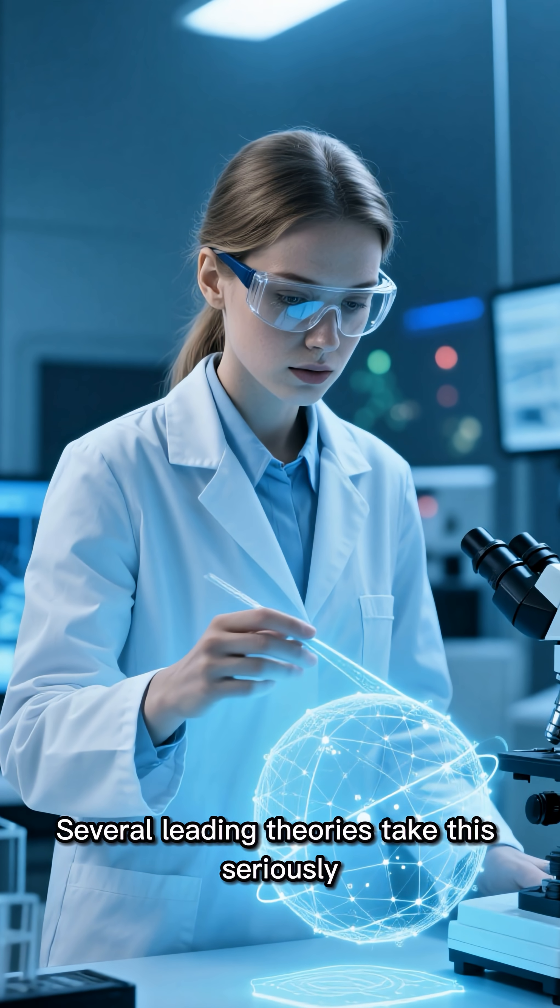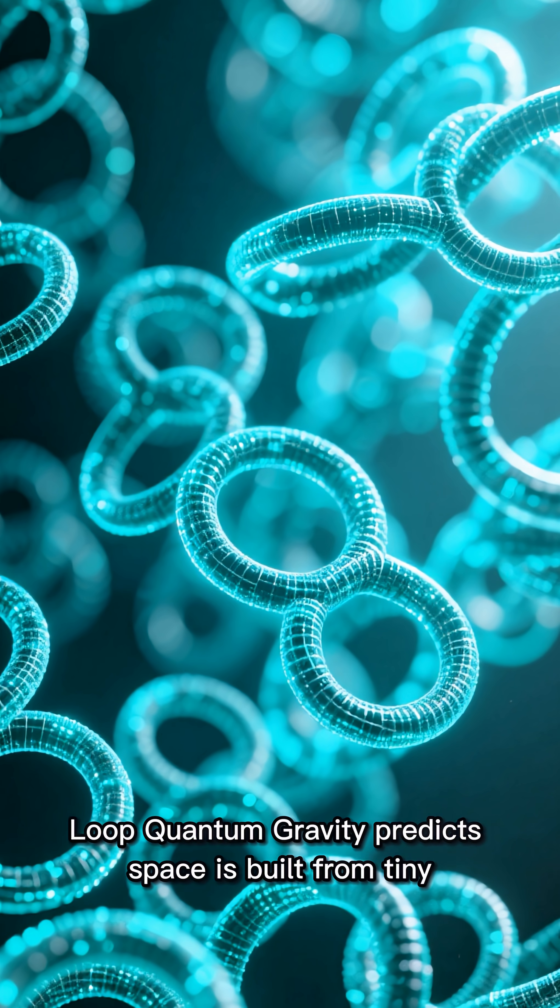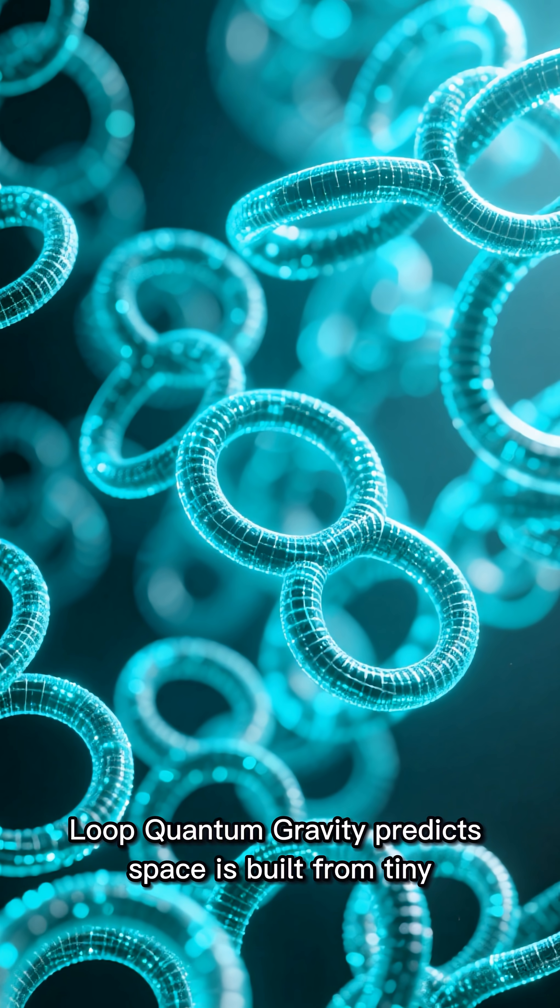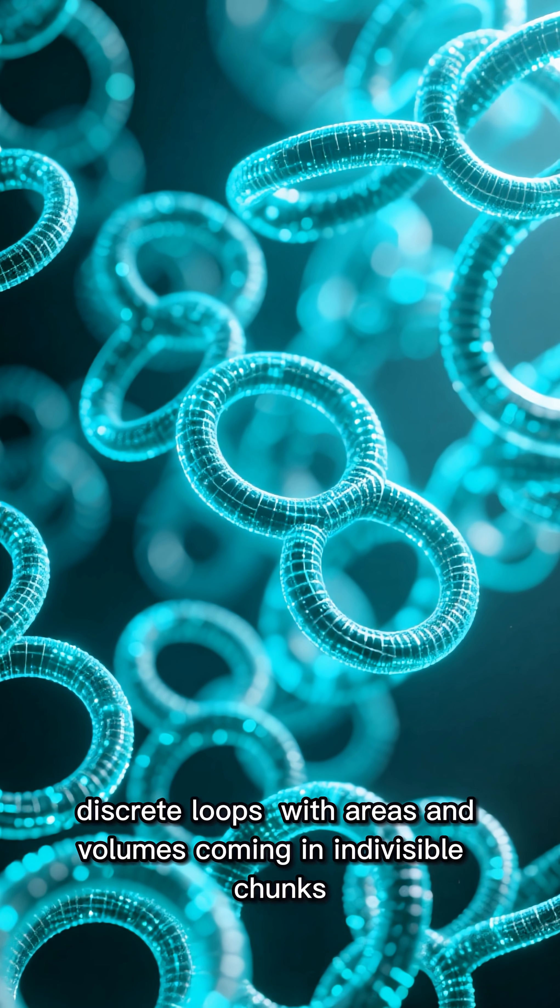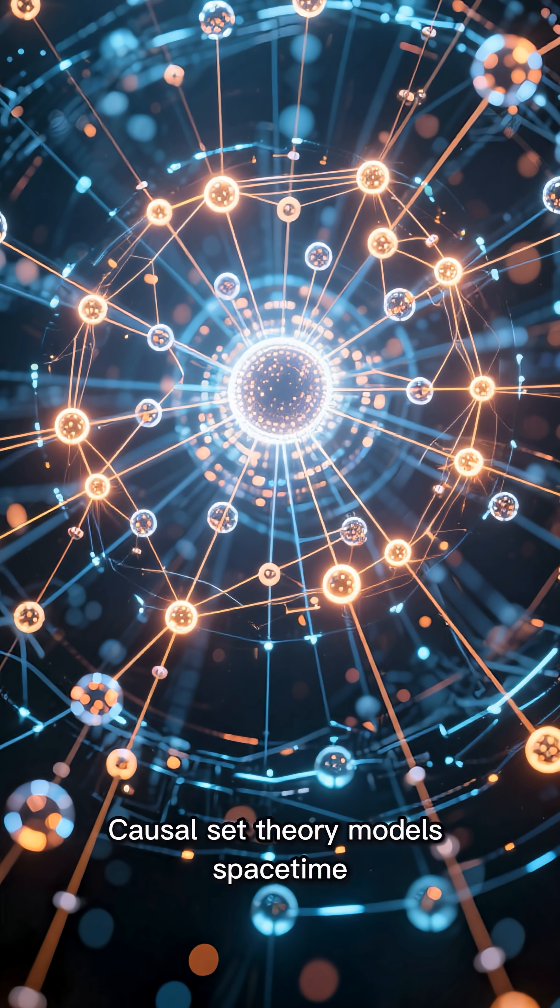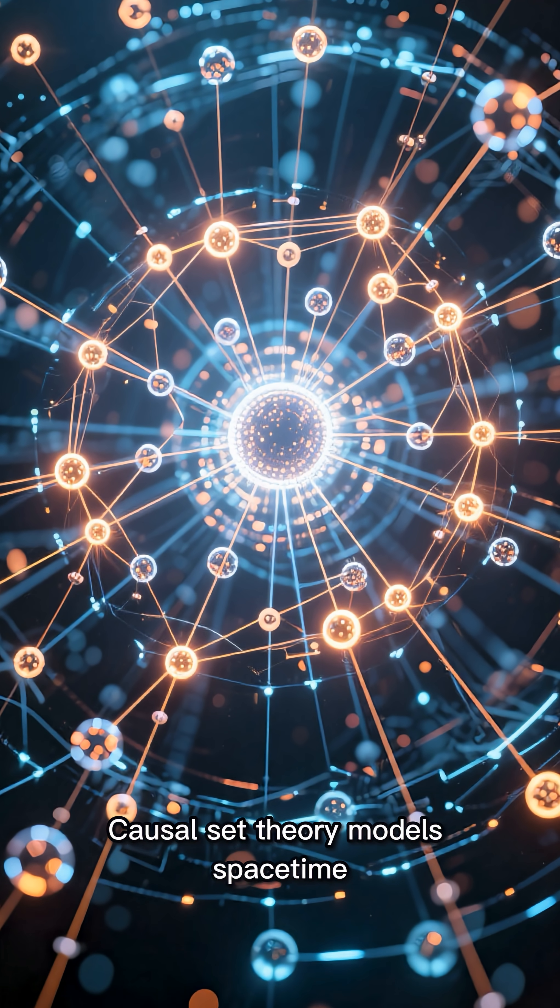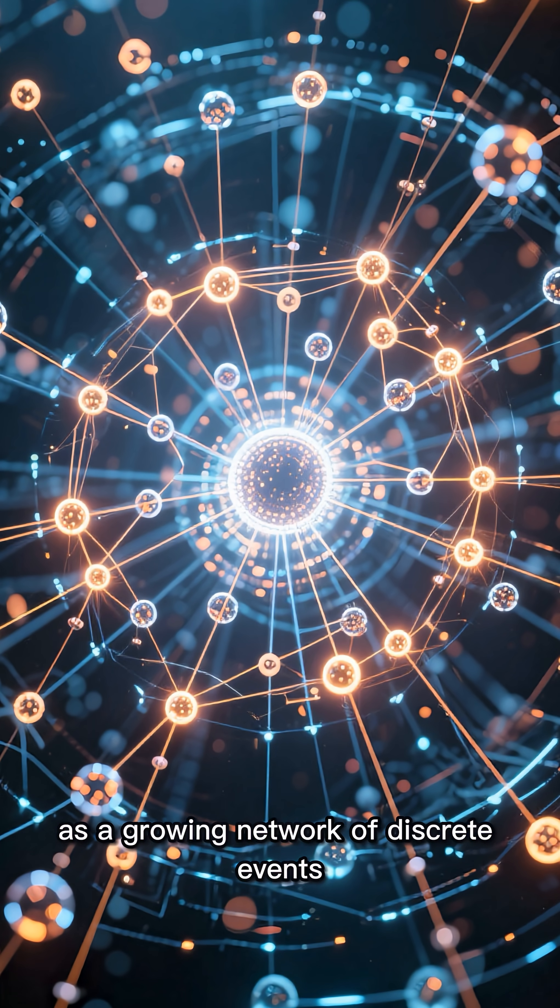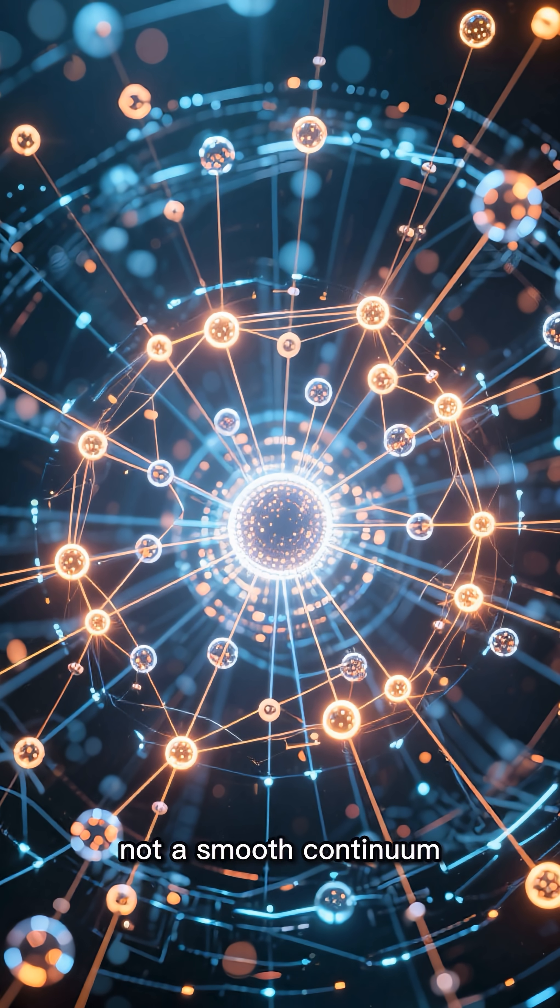Several leading theories take this seriously. Loop quantum gravity predicts space is built from tiny discrete loops, with areas and volumes coming in indivisible chunks. Causal set theory models space-time as a growing network of discrete events, not a smooth continuum.